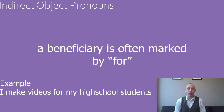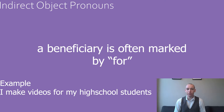The other role that the indirect object plays is that of beneficiary. The word that can help us to determine a beneficiary is for. For example: I make videos for my high school students. In this example the high school students are a beneficiary.